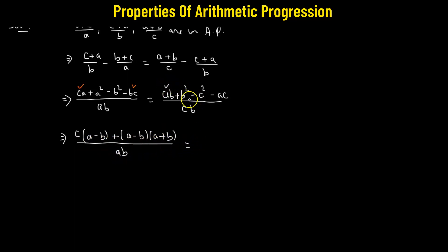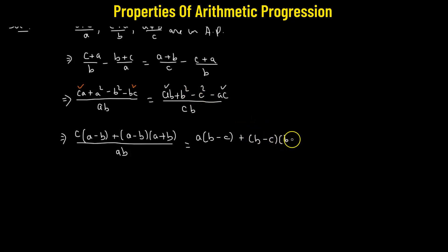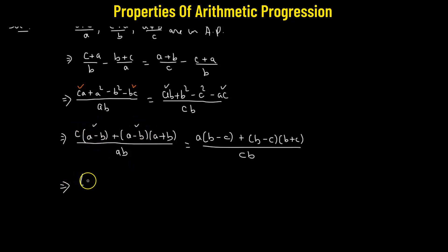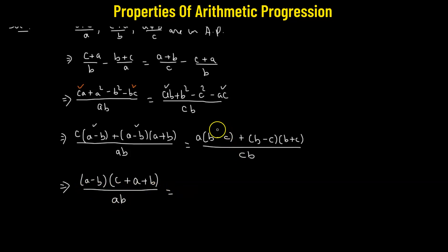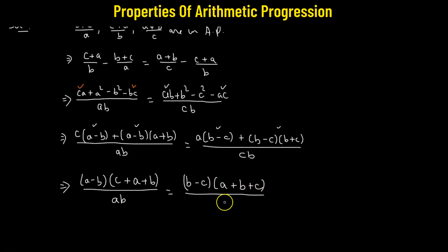This will be equal to: combining ab and negative ac by taking a as the common factor, so we have a multiplied by (b−c), plus combining the second and third terms, b²−c² is simply (b−c)(b+c), divided by cb. Now, from both the two terms in the numerator, we can take (a−b) as the common factor. So we have (a−b) multiplied by: from the first term we are left with c, and from the second term we are left with (a+b), whole divided by ab. This equals (b−c) multiplied by (a+b+c), whole divided by cb.